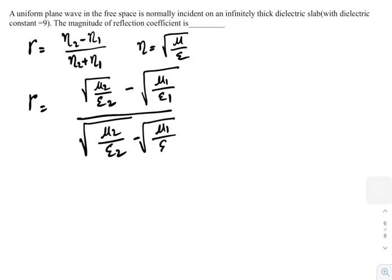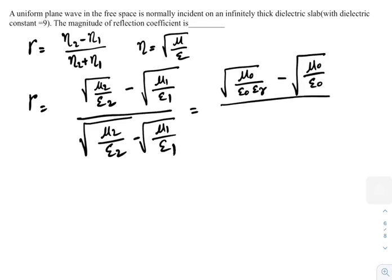That equal to root over mu o by epsilon o epsilon r minus root over mu o by epsilon o by root over mu o by epsilon o epsilon r minus root over mu o by epsilon o.